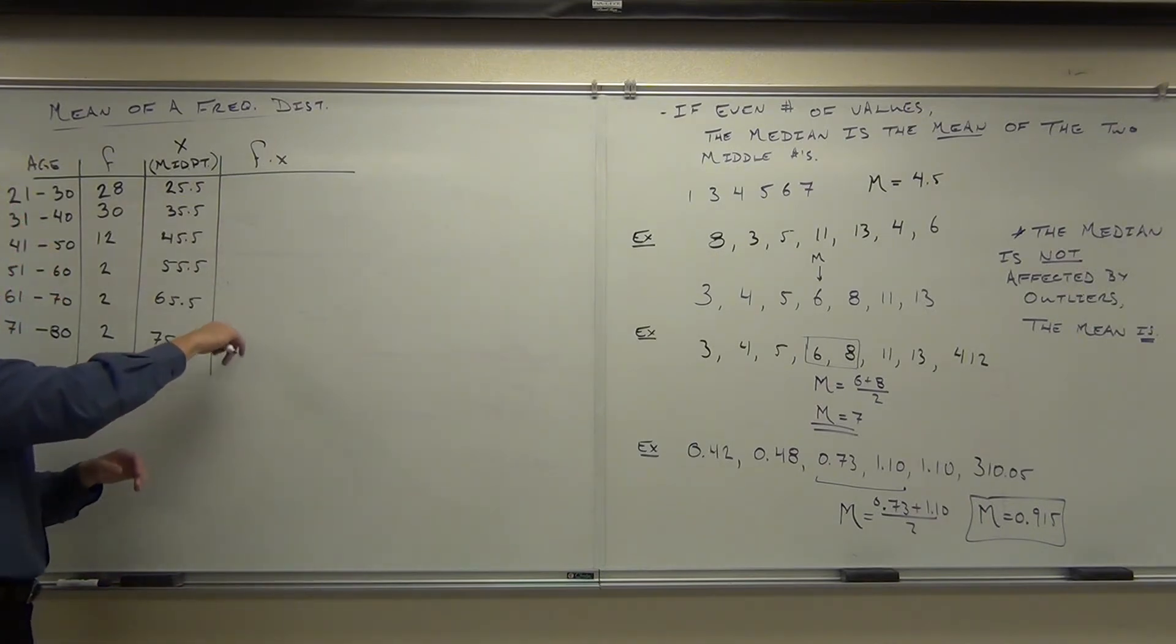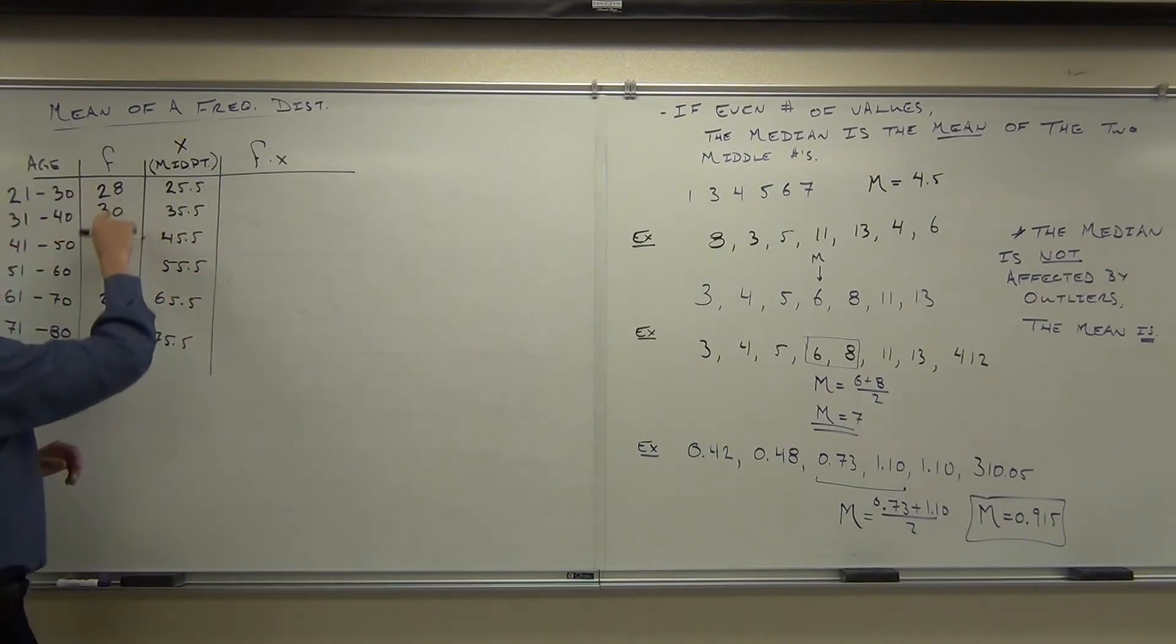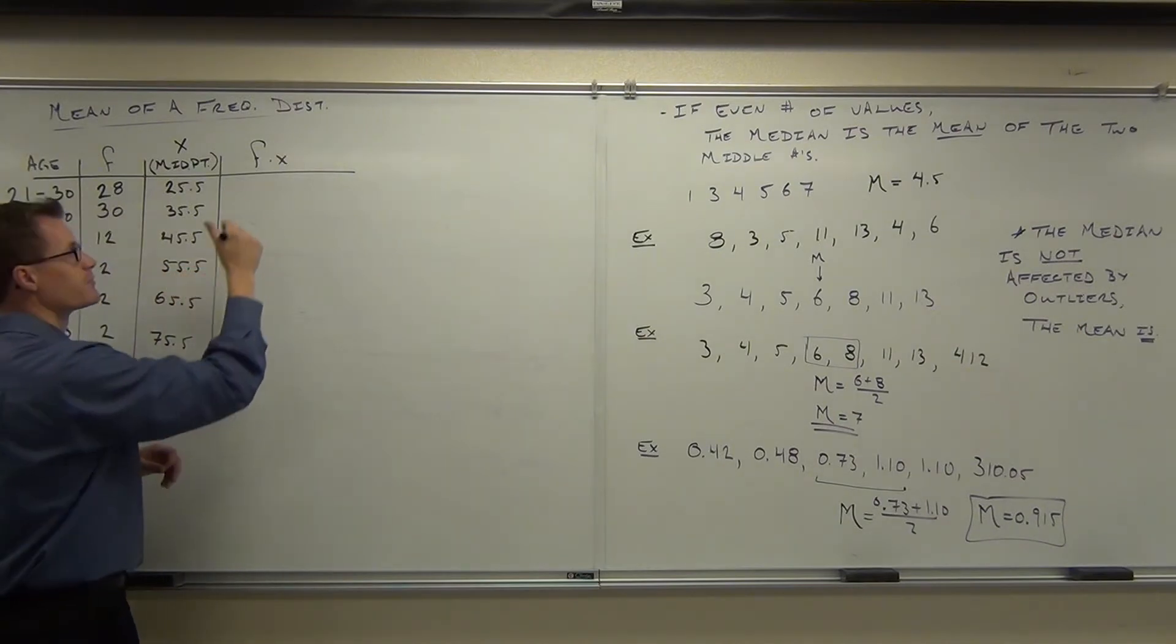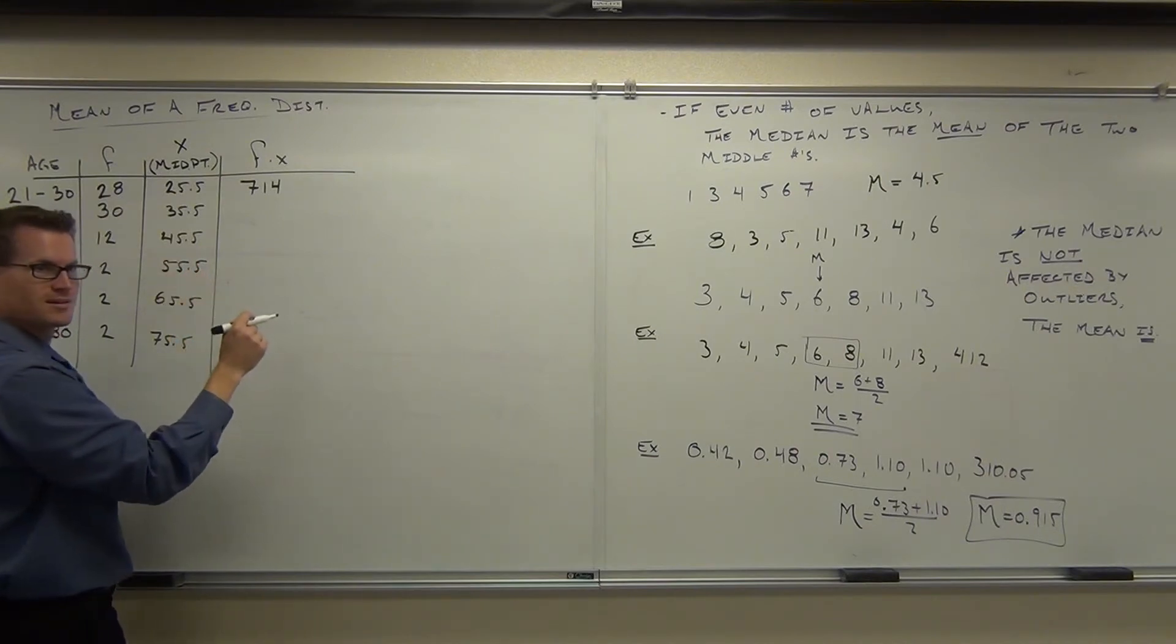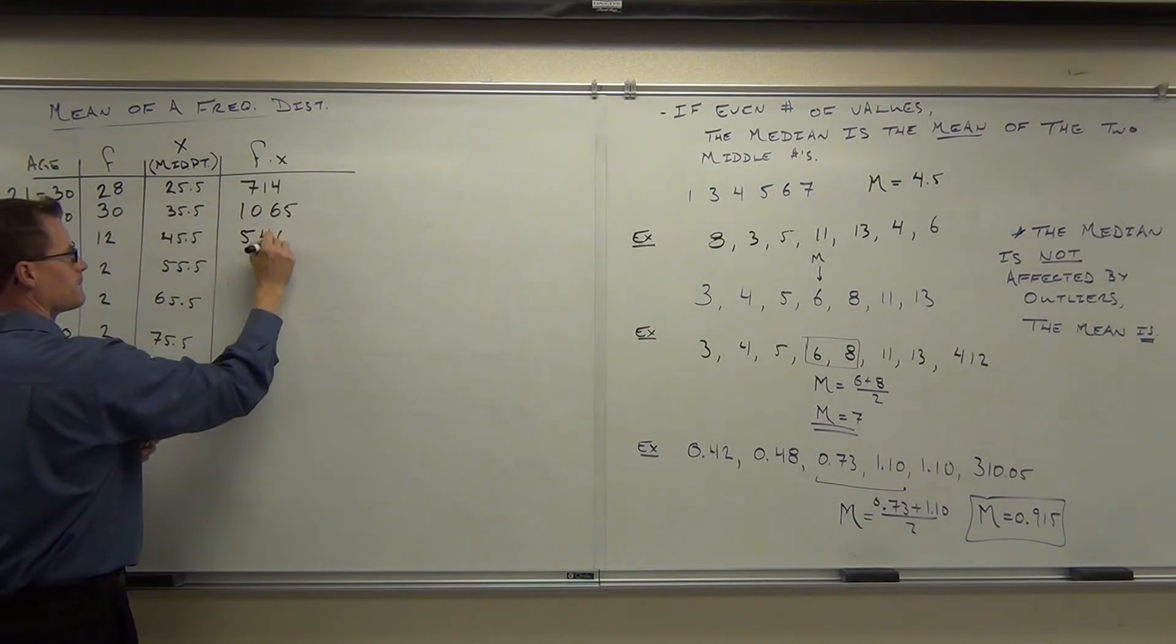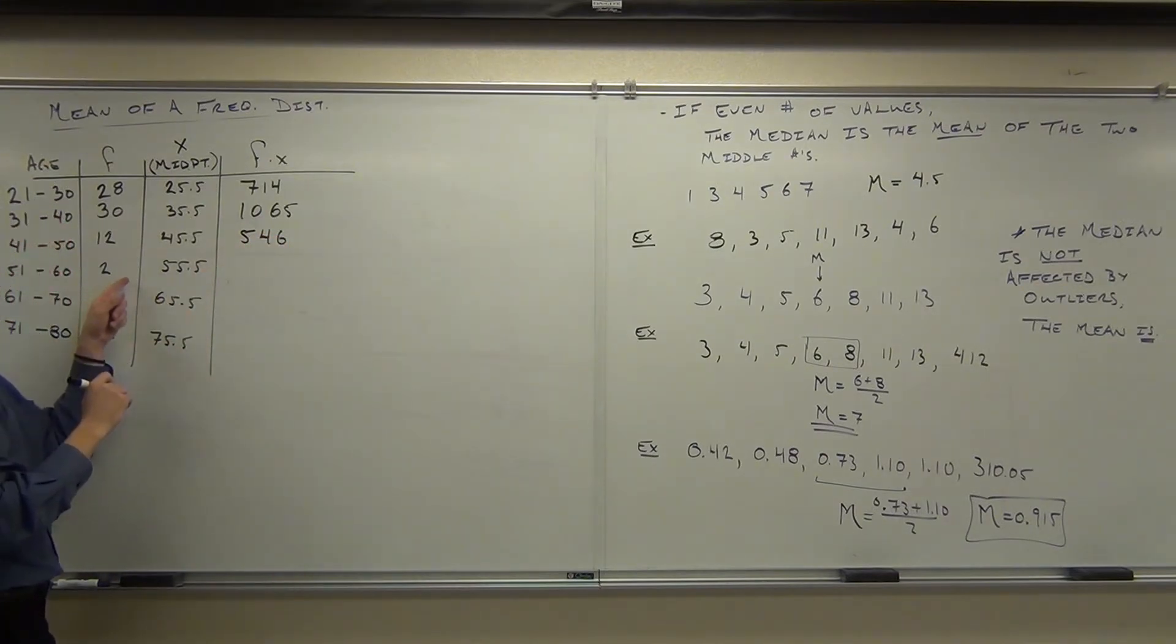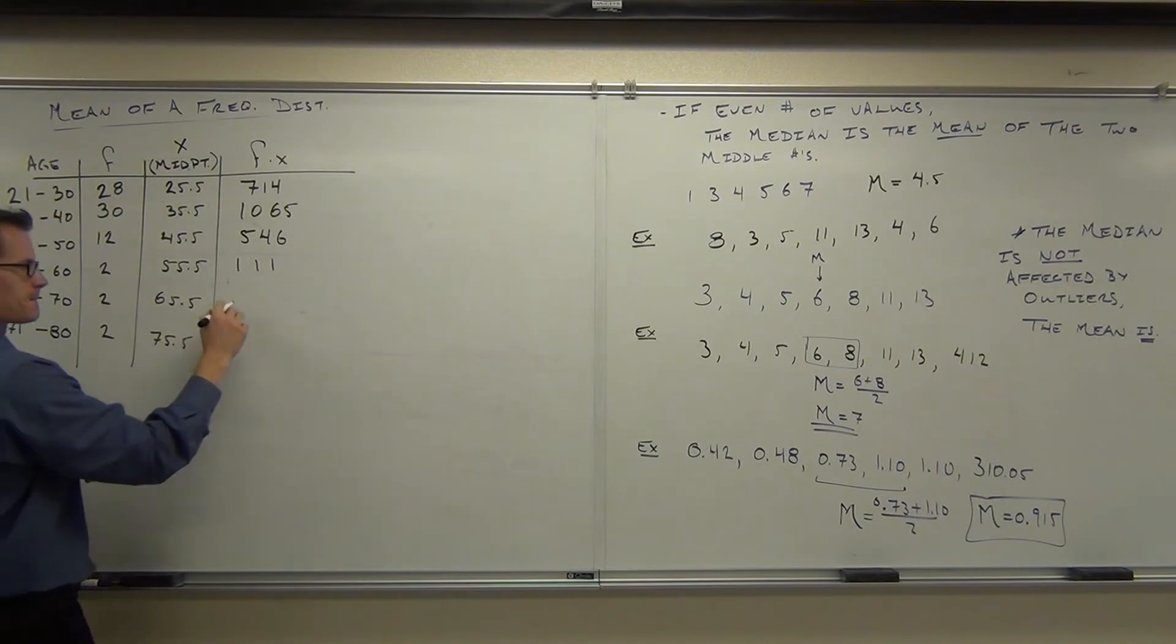Can you give me, some people start working from the bottom, because they want those numbers quickly. So you guys start working from the bottom, you guys start working from the top. Top people, does anyone have 28 times 25.5? 714. 714, okay, very good. How about the next one? Quickly, but correctly. 1,065. Thank you. Next one. 546. This one? 111? Yep. 131. 131. Perfect.